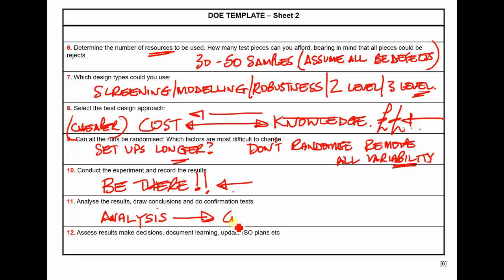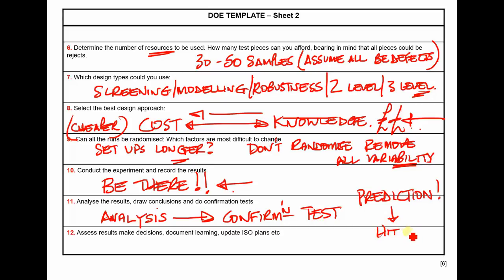Don't give the test pattern to a technician and ask him to run the eight tests — he won't know why the tests are what they are, and if things change he won't think anything of it. Be there and record everything. Then do the analysis. And a key point: do a confirmation test. Make a prediction of what the result will be. If you hit it, you've proved you have true process knowledge. That is the real test of whether the DOE was successful.